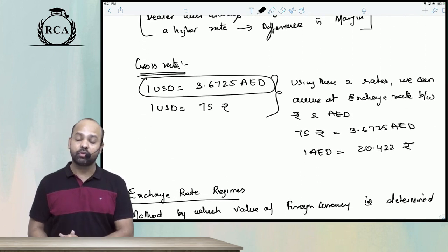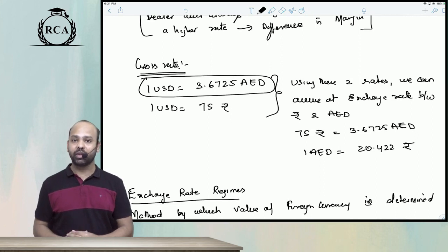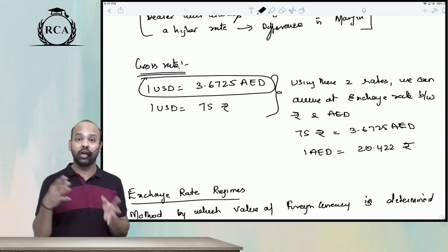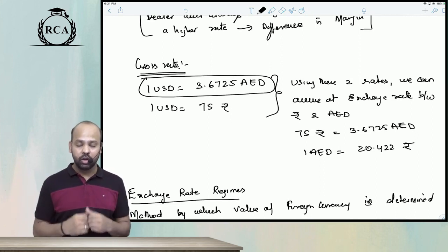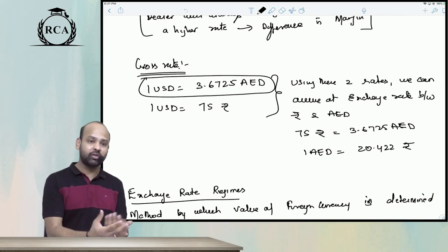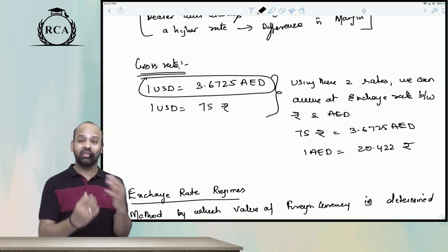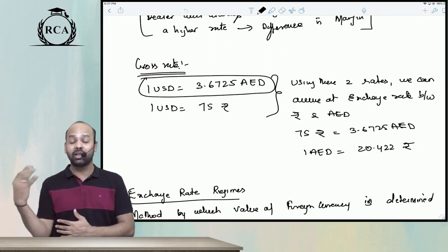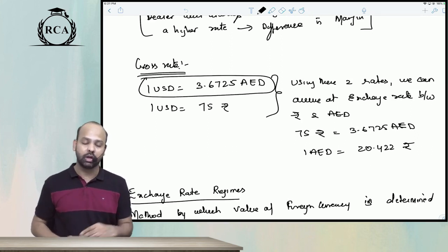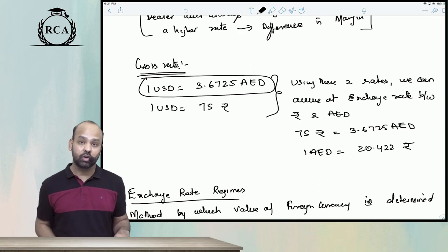A dealer's buying rate is always lower than the dealer's selling rate. The concept of cross rate: if you know the exchange rate between, say, the US dollar and Hong Kong dollar, and you know the exchange rate between the rupee and US dollar, using this relation you can arrive at the exchange rate between rupee and Hong Kong dollar. That is called a cross rate.